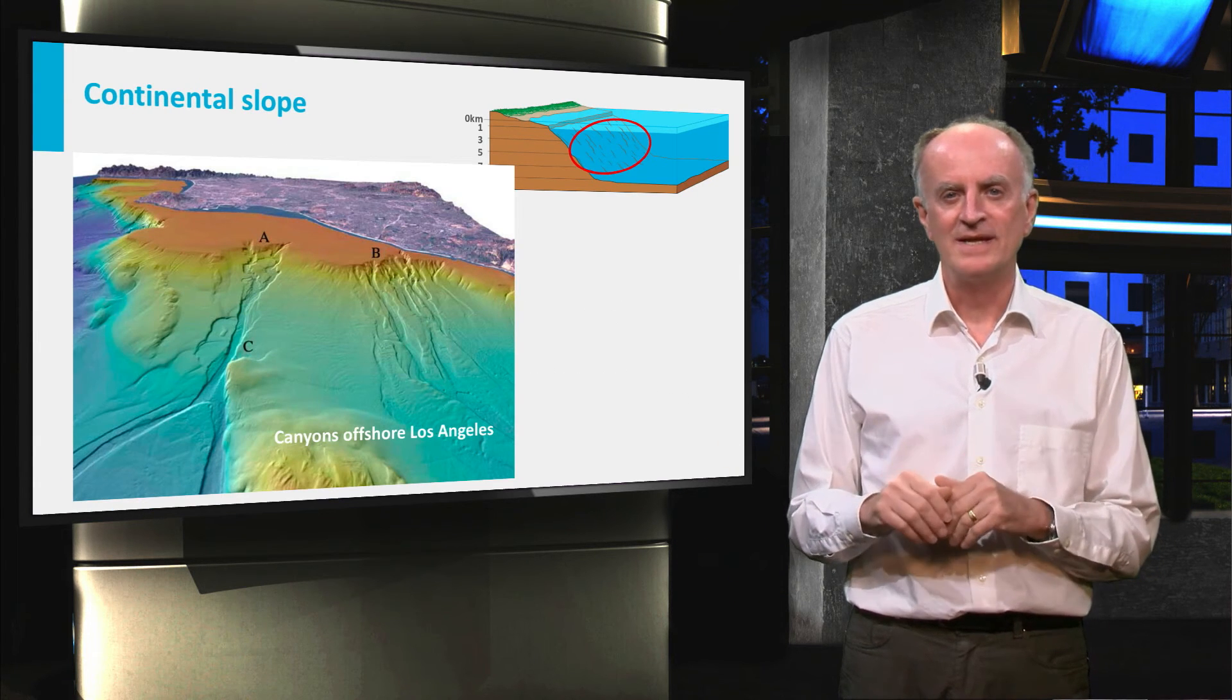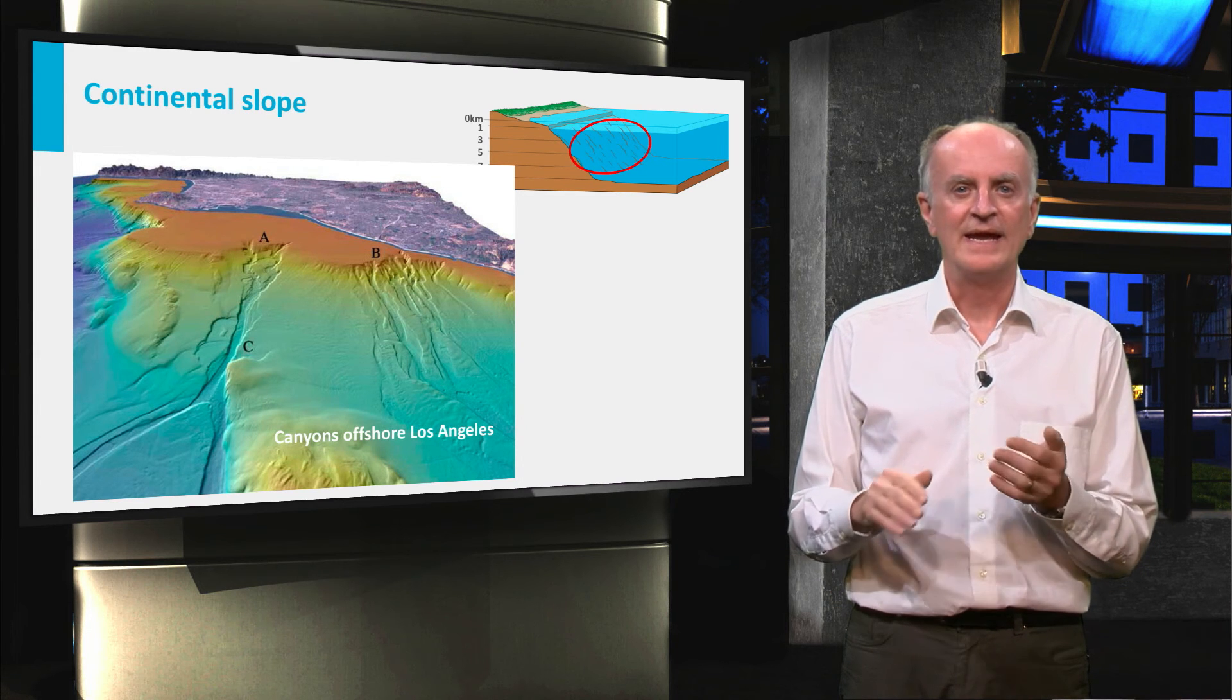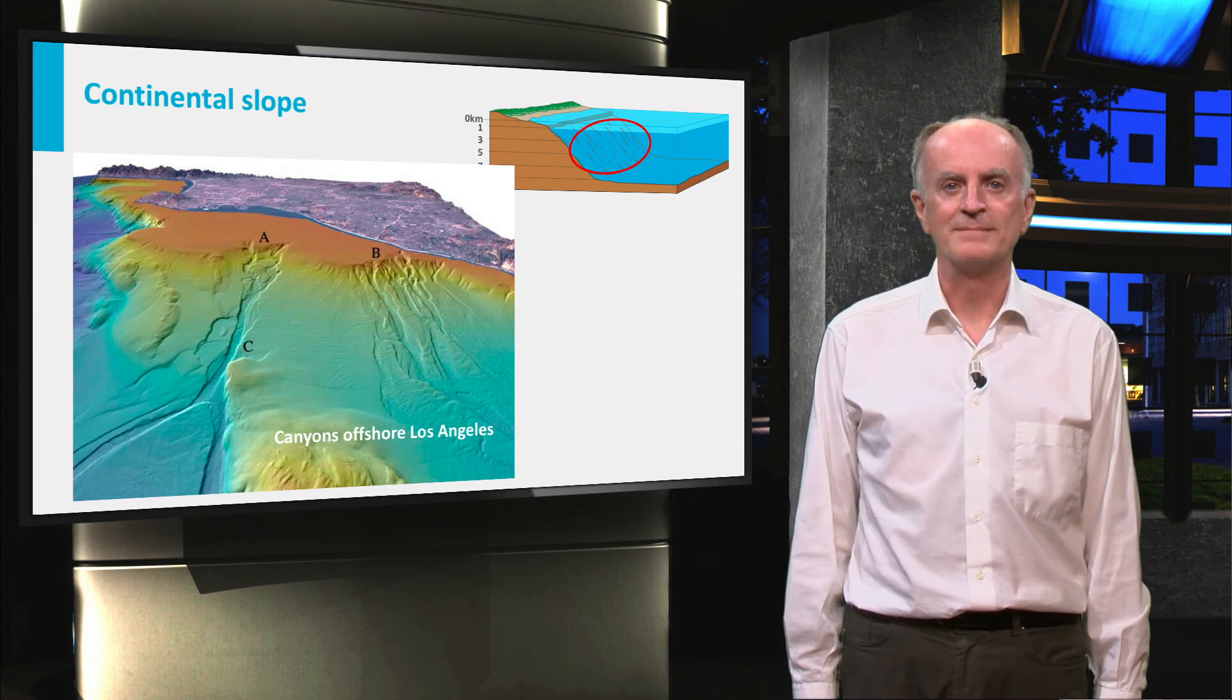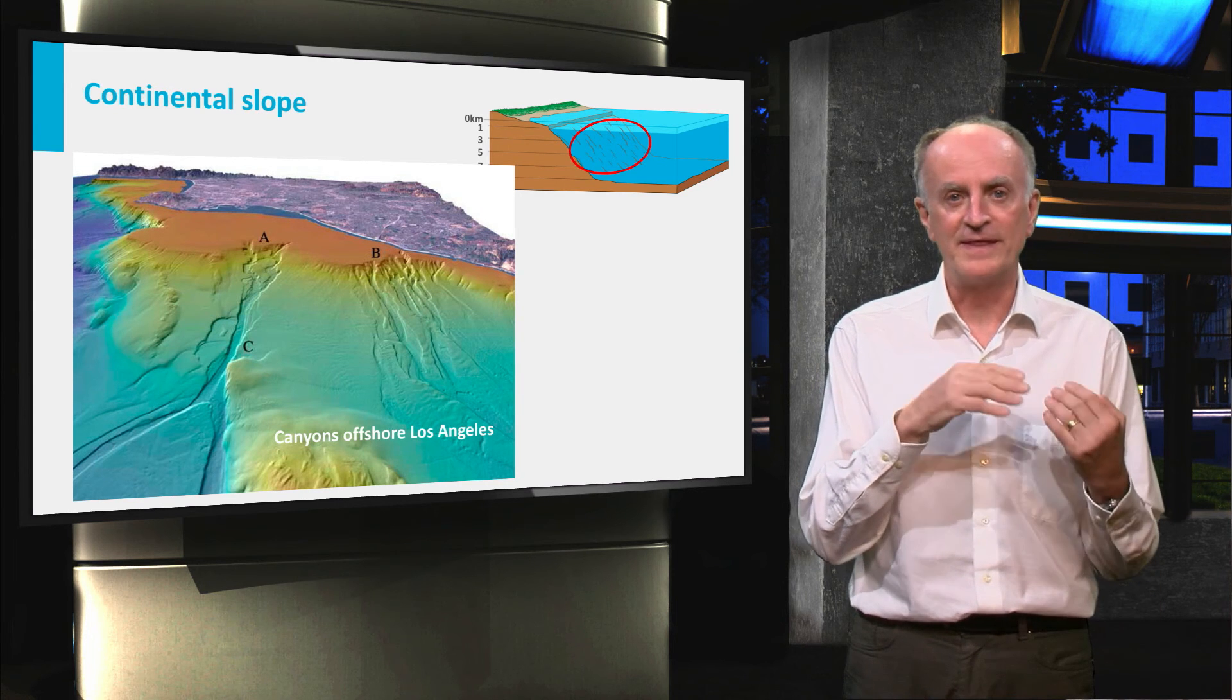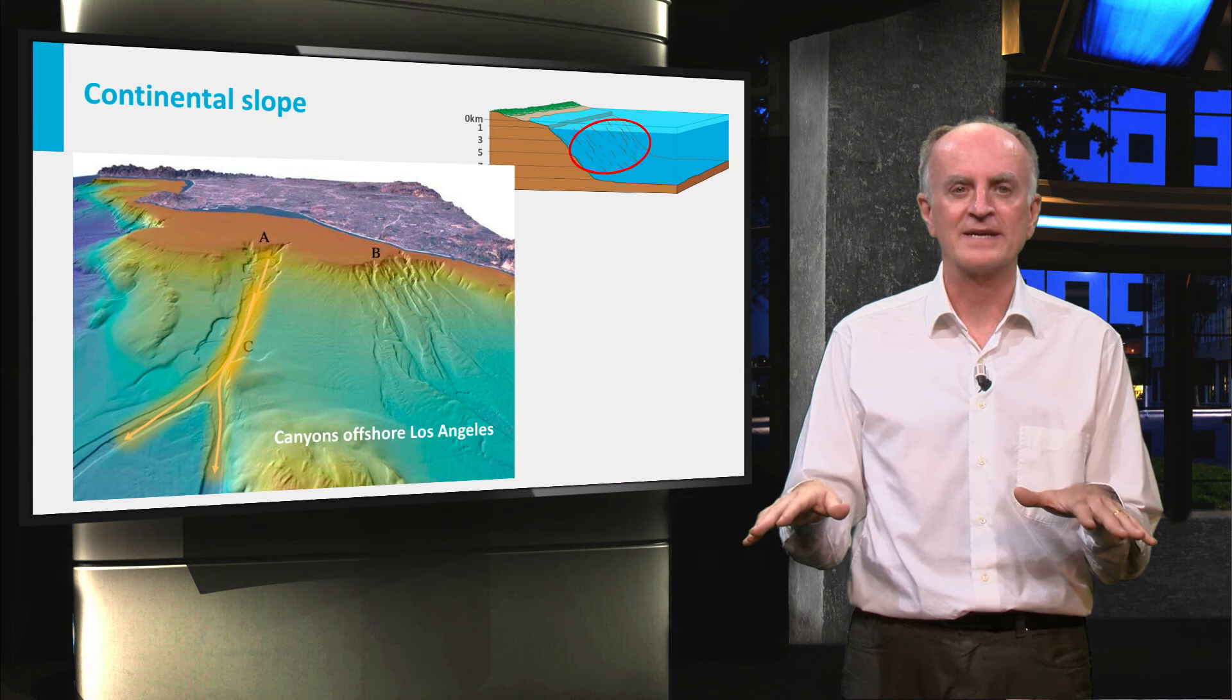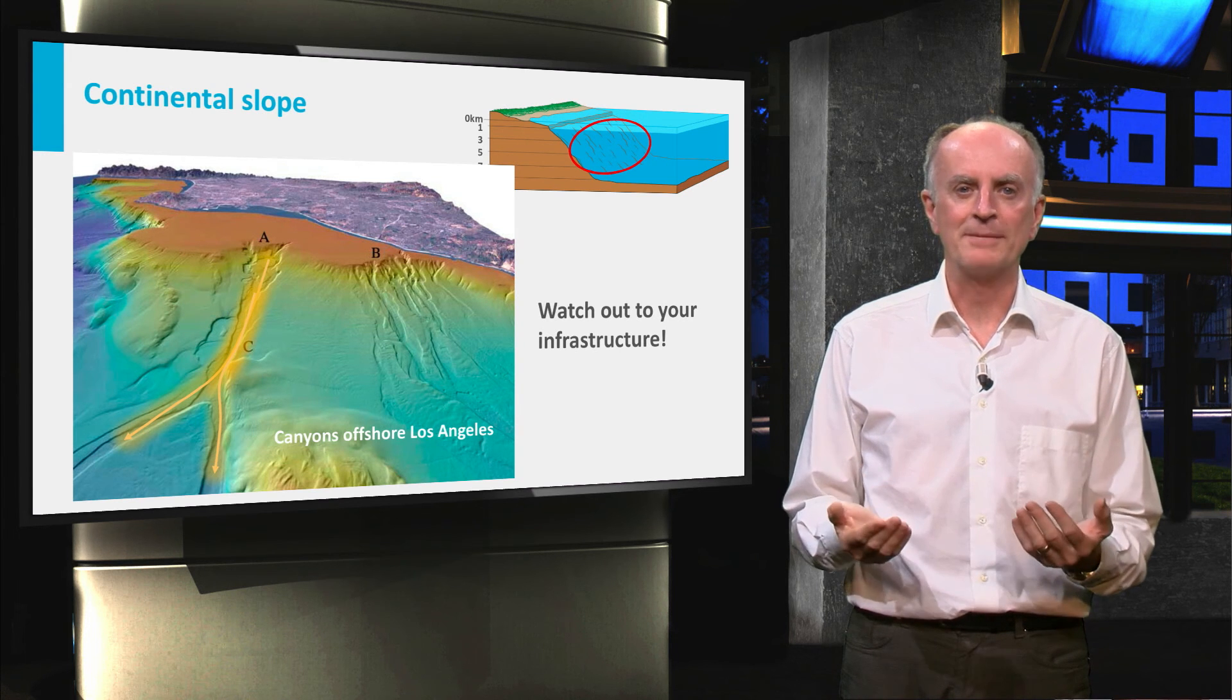Having passed the shelf margin, the seafloor starts rapidly deepening, eventually leading to the abyssal plains. This is the continental slope, a tens of kilometers wide region with a slope of less than a few degrees. Nothing spectacular for our eyes as human beings, but of great importance in the marine domain. It is the region bypassed by the sediments which have been deposited on the shelf and then transported down to the abyssal plain. Huge sediment-loaded currents move to the abyssal plain, often eroding and producing the characteristic canyons. Among many others, hydrocarbon and communication companies are very worried about these slope currents as they can endanger their pipes and cables.